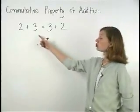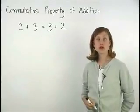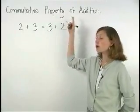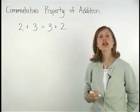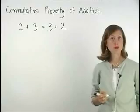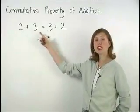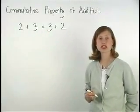The problem 2 plus 3 equals 3 plus 2 demonstrates the commutative property of addition. In other words, the commutative property of addition says that changing the order of the addends does not change the sum.